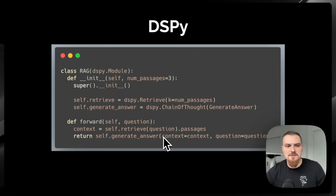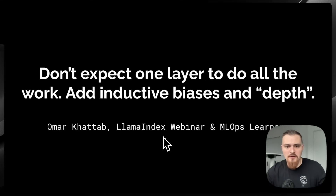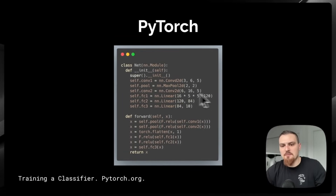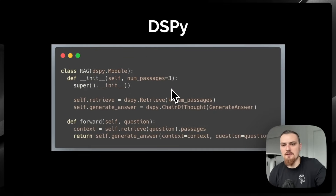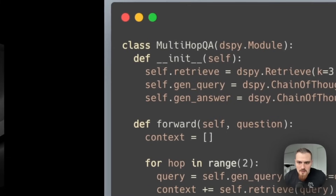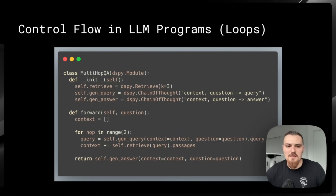The first analogy I took from Omar: don't expect one layer to do all the work — add inductive biases and depth. In the convolutional PyTorch network, the convolution has this inductive bias of the weight-sharing kernel as it slides across an image pixel matrix. Similarly, these signatures have this inductive bias of what the part of the program is supposed to do. If you have a signature of 'context question query,' you could think of that as an inductive bias of what this component of the program is supposed to be doing.